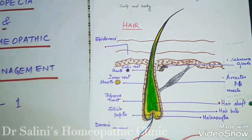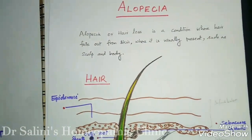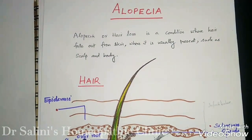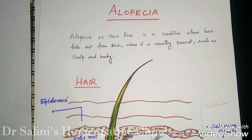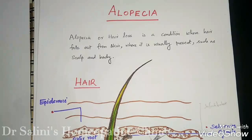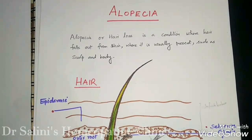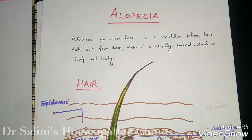Basically, what is alopecia? Alopecia or hair loss is a condition where hair falls out from skin where it is usually present, such as the scalp and the body.